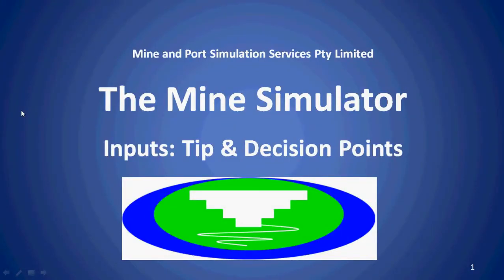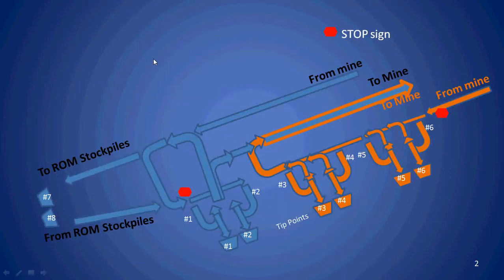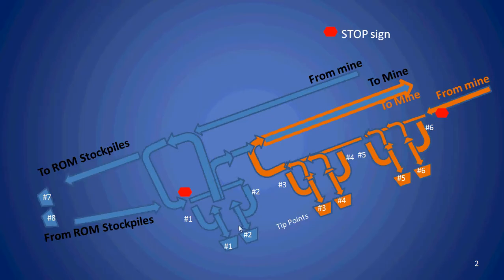This is a video of the Mine Simulator TMS. We're going to discuss all truck tip and decision points. This is the graphics from a large open pit mine in South America. Generally all trucks travel down the blue line, go around, stop at a stop sign, and then a decision is made where they may tip their load. If the crushers and everything are working and available, one truck may go down, reverse, tip its load, and go back out to the mine.